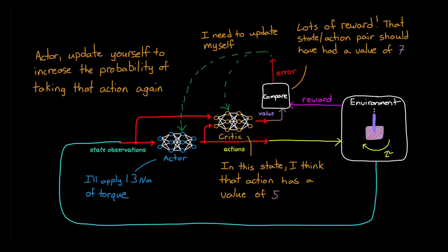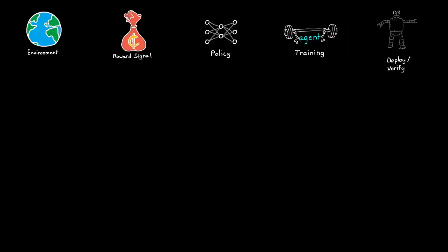With actor-critic methods, the agent can take advantage of the best parts of policy function and value function algorithms. Actor-critics can handle both continuous states and action spaces and speed up learning when the returned reward has high variance. Now, I'm going to show you an example of using an actor-critic based algorithm to get a bipedal robot to walk in the next video. But before I close out this video, I want to briefly discuss the last step in the RL workflow.